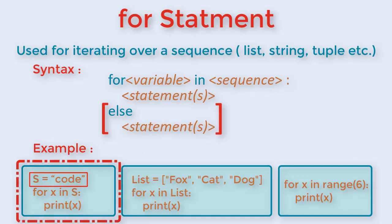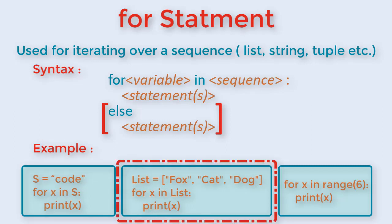For example, here we have a string. x will take on each letter one by one and the loop will execute four times and print the value of x. Similarly, here we have a list in the for loop. x will hold the value of the list one by one and the loop will execute three times and print the values of the list.